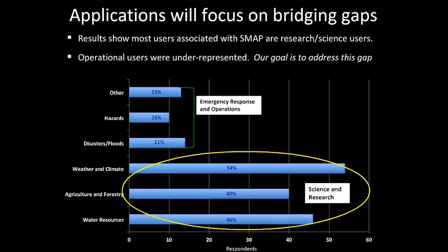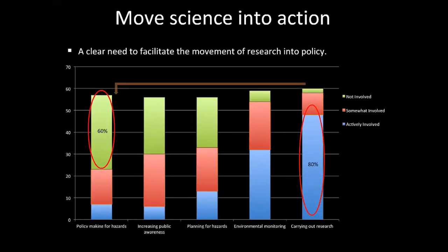Increasing communication isn't necessarily enough — we needed to understand why that community was not well represented. In a policy-making and public awareness portion of the survey, 80% responded that their involvement was mainly research-driven, and 60% of those conducting research said they were not actively involved in any policy-making effort. We found this to be a very important gap: those involved in research feel they're not connecting to policy bodies, and in order to make science products known to hazards and emergency management users, the science has to move out of the scientific realm.